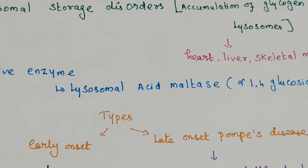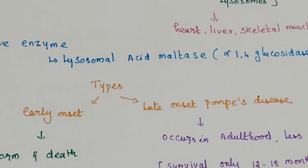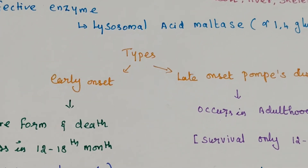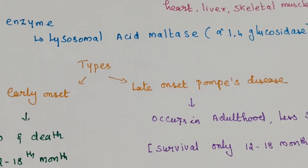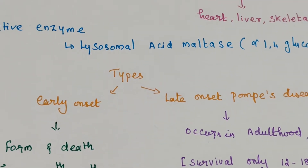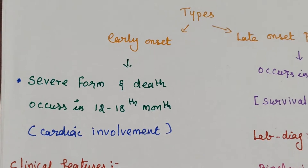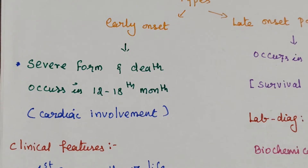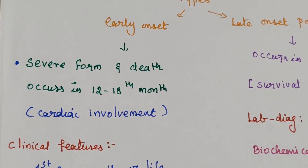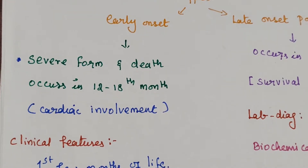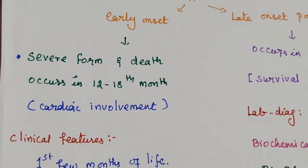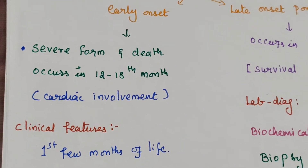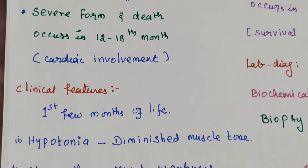There are two main types of Pompe's disease: early onset and late onset. The early onset of Pompe's disease is a severe form, and death of the child occurs between 12 and 18 months due to cardiac involvement. It mainly involves cardiac involvement.